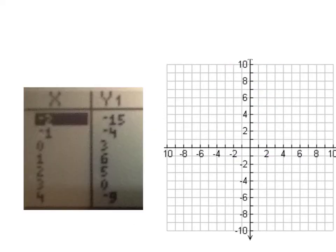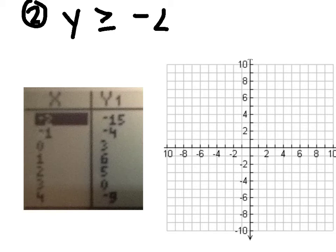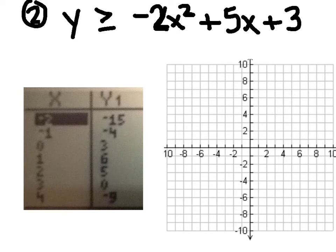For our second problem, we are going to tackle y is greater than or equal to negative 2x squared plus 5x plus 3. Now, even though we have a coefficient now in front of the x squared, it shouldn't really make our job that much harder because we're going to rely on our calculator to generate this table of values. So again, just to reiterate, our first step is we're going to pretend for a moment that this is a quadratic equation rather than an inequality. And we're going to go to our calculator in y sub 1, and we'll enter in the equation negative 2x squared plus 5x plus 3.